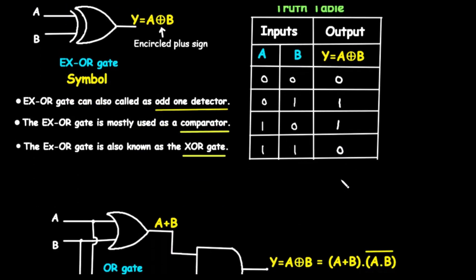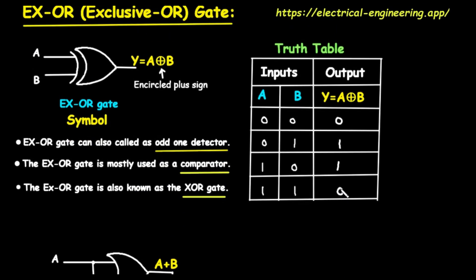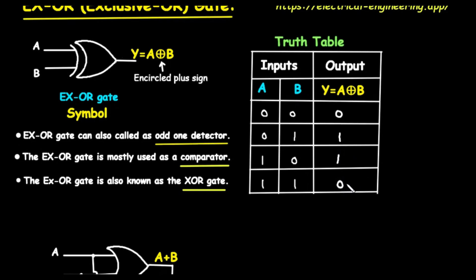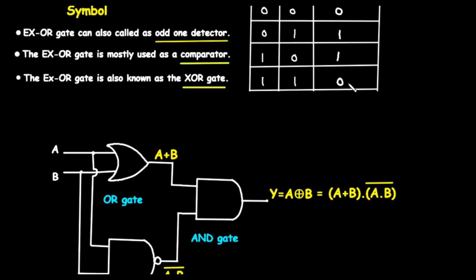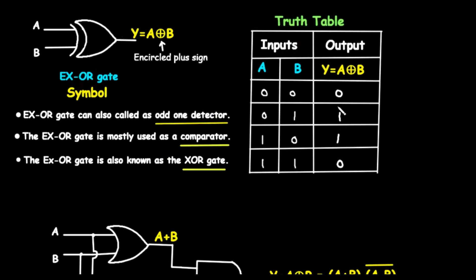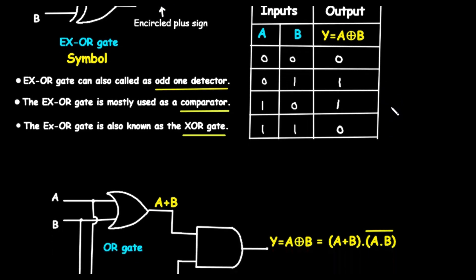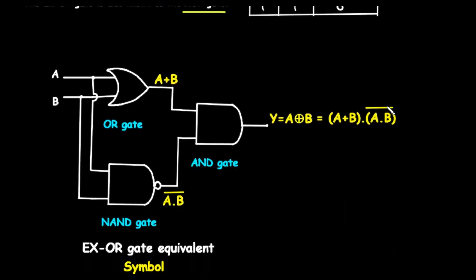To summarize the truth table: the EXOR gate's output is one only when its inputs are different from each other. If the inputs are the same — either both zero or both one — the output is zero. This behavior is what makes it an exclusive OR gate.